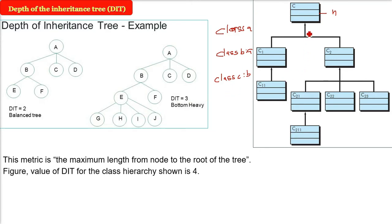So this metric is the maximum length from node to the root of the tree. How many nodes you are covering? For example, one, two, three, four. Just compute the number of nodes. You have four nodes here. So this is the depth of inheritance. And since we have C1, for example C2, just take. The DIT of class hierarchy in this figure as I am suggesting is 4.